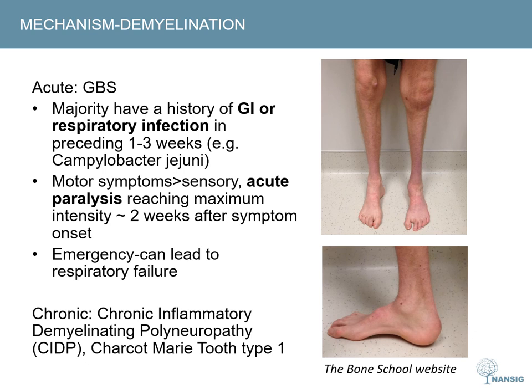There are also chronic demyelinating polyneuropathies such as CIDP — chronic inflammatory demyelinating polyneuropathy — and Charcot-Marie-Tooth disease type 1, one of the hereditary causes. Type 1 is the most common variation and onset is usually in childhood. There is muscle weakness and wasting in the feet and lower limbs, giving rise to what is described as inverted champagne bottle legs. Foot drop and foot deformities such as high arch and hammer toes are also common.